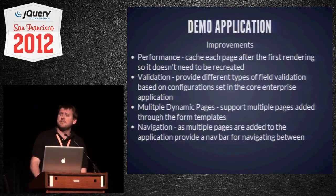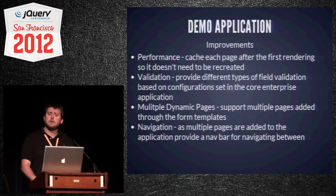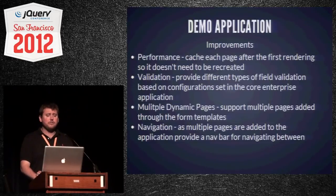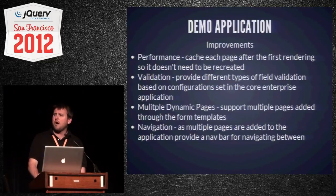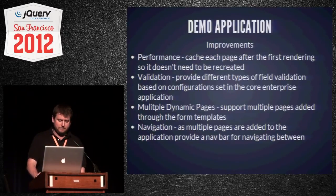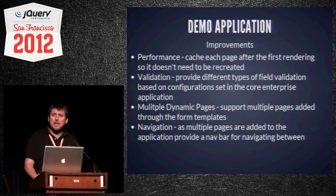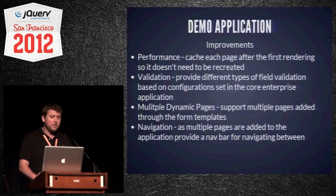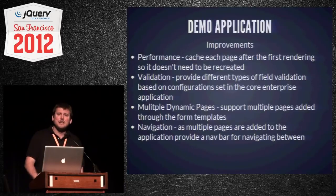Improvements we can make to the demo app include: caching each page after rendering so it doesn't need to be recreated; adding different types of field validation beyond just required fields — the form template could specify the expected data type such as email or phone, and JavaScript functions could validate without attaching to a specific control; and supporting multiple pages with dynamically added navigation bar entries so we can move through all the different pages.